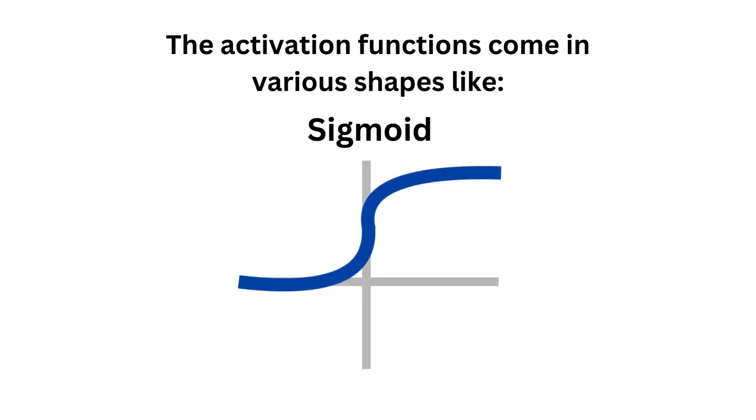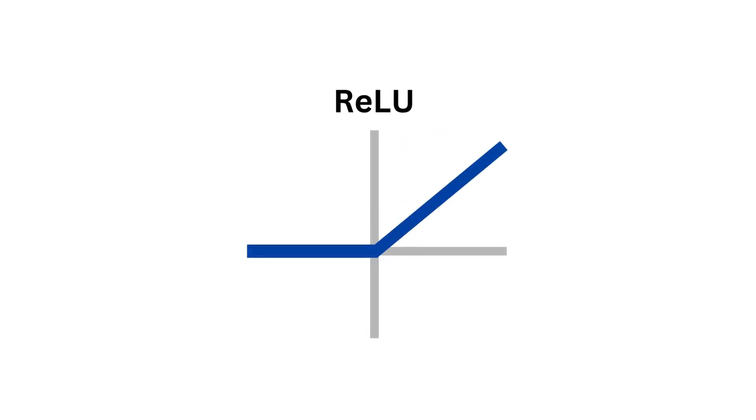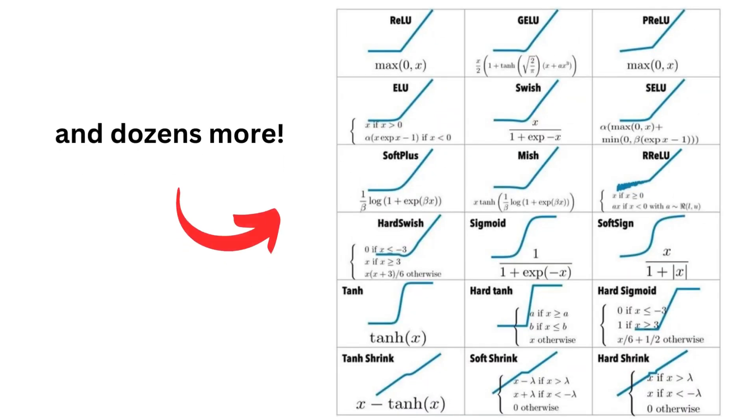The activation function comes in various shapes like sigmoid, tanh, relu, leaky relu, and dozens more.